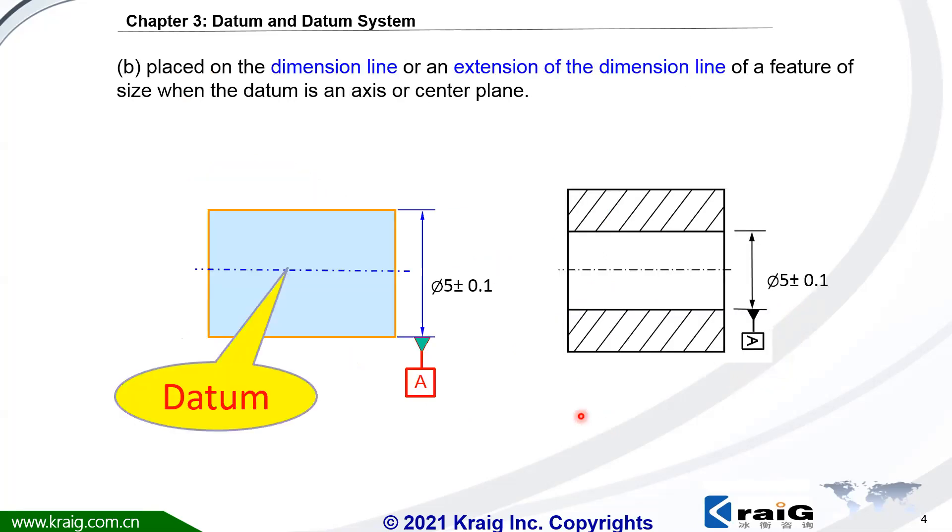If the datum A is put along the extension of dimension line, here is the dimension line, the datum A is the axis of this cylinder. Same thing for here. If this is a hole, that means datum A is the axis of this hole.